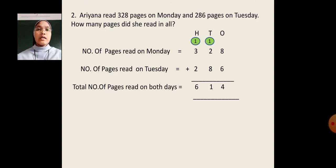Number of pages read on Monday, 328. Number of pages read on Tuesday, 286. 8 plus 6, 14. 14's you have to write 4. 1 will carry 10's place. 1 plus 2, 3. 3 plus 8, 11. 11's you have to write 1. 1 will carry 100's place. 1 plus 3, 4. 4 plus 2, 6. So, the total number of pages read on both days are 614.